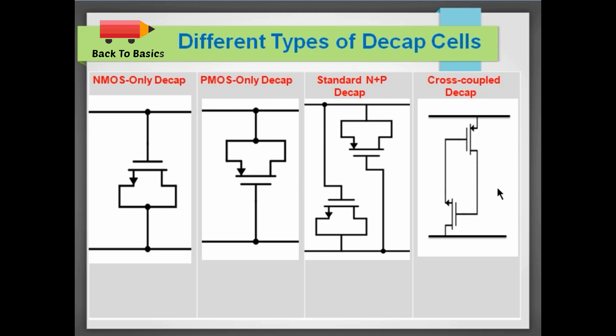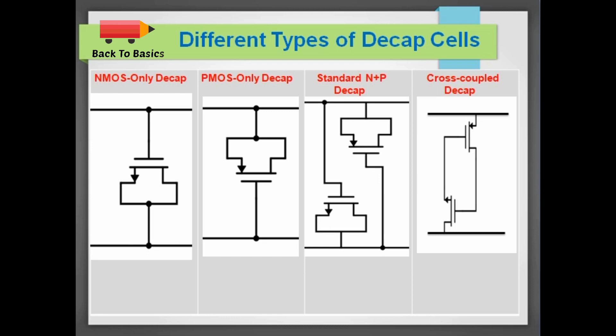Whereas these other types of standard cells which contain both NMOS and PMOS devices are used within standard cell blocks. This is because within a standard cell, the upper half cell area is reserved for PMOS devices and the lower half cell area is reserved for NMOS devices. So therefore it is easier to put decap cells which contain both NMOS and PMOS.